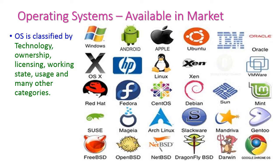Next let us see the different types of operating systems available in the market. The most popular operating system is Windows. For mobile applications, many people use Android. Apple is another popular operating system. Ubuntu is for open source, and many other operating systems are also available. Based on the operating system we can classify them by technology, ownership, licensing, working state, usage, and many other categories. In our syllabus we will focus on the open source operating system.